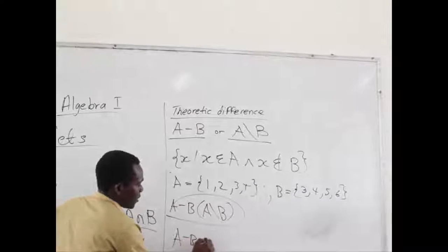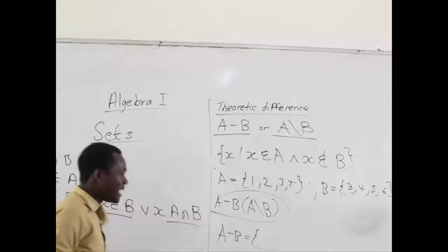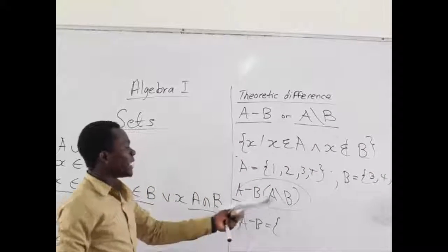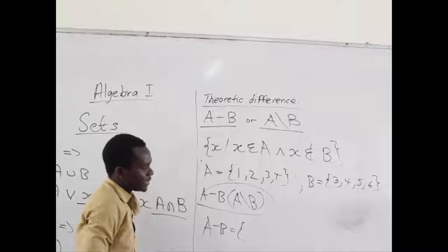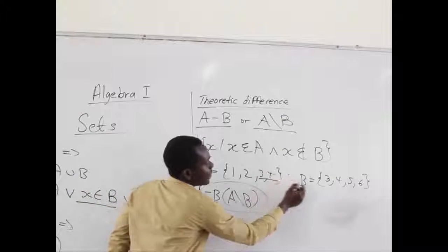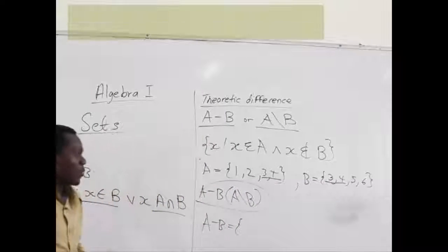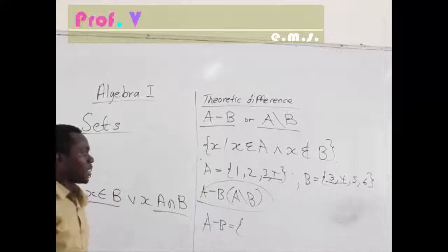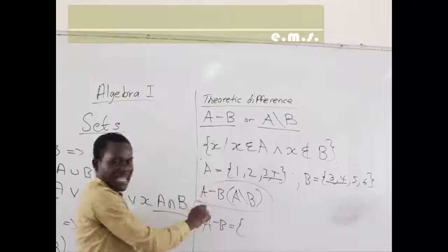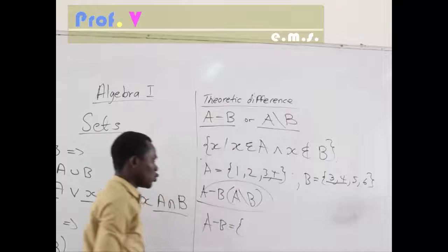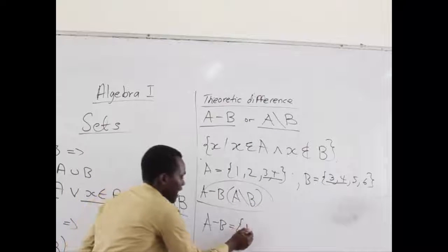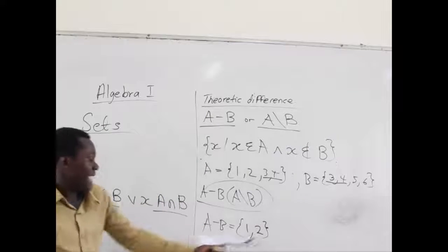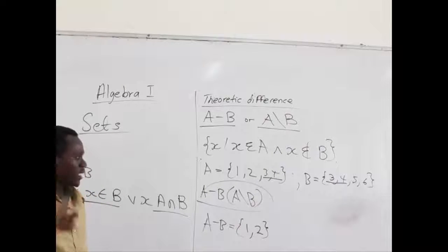So, taking A minus B, we seek elements that are in A and are not in B. First, we need to locate elements that are in B. We can find out that 3 and 4 are common to both sets. But we want the ones that exist in A but do not exist in B. So, our Theoretic Difference here is the elements 1 and 2, because they exist in only A but not B.